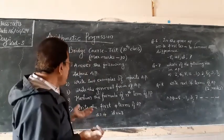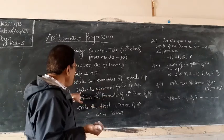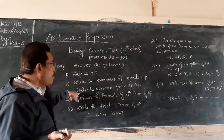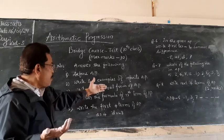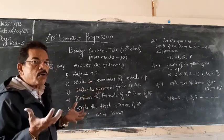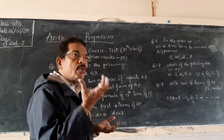Then write the general formula of AP. Mention the formula of nth term of an AP. You have to write what is 'a', what is 'n', and mention everything.